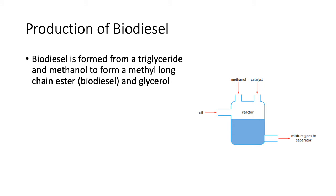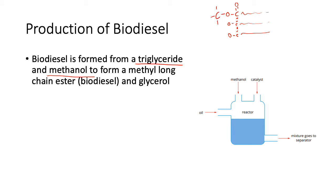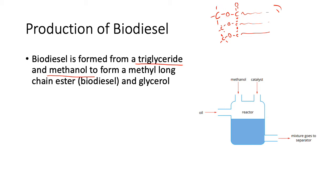The first step is that biodiesel is formed from a triglyceride — you've seen triglycerides before from soaps. It's a triple long-chain carbon with carboxylate groups. That triglyceride reacts with methanol to form methyl long-chain esters. So instead of removing the ends to make soap particles, what you're doing is adding on a methyl group, making it a methyl ester. These particles can be burnt as fuel to power the car.